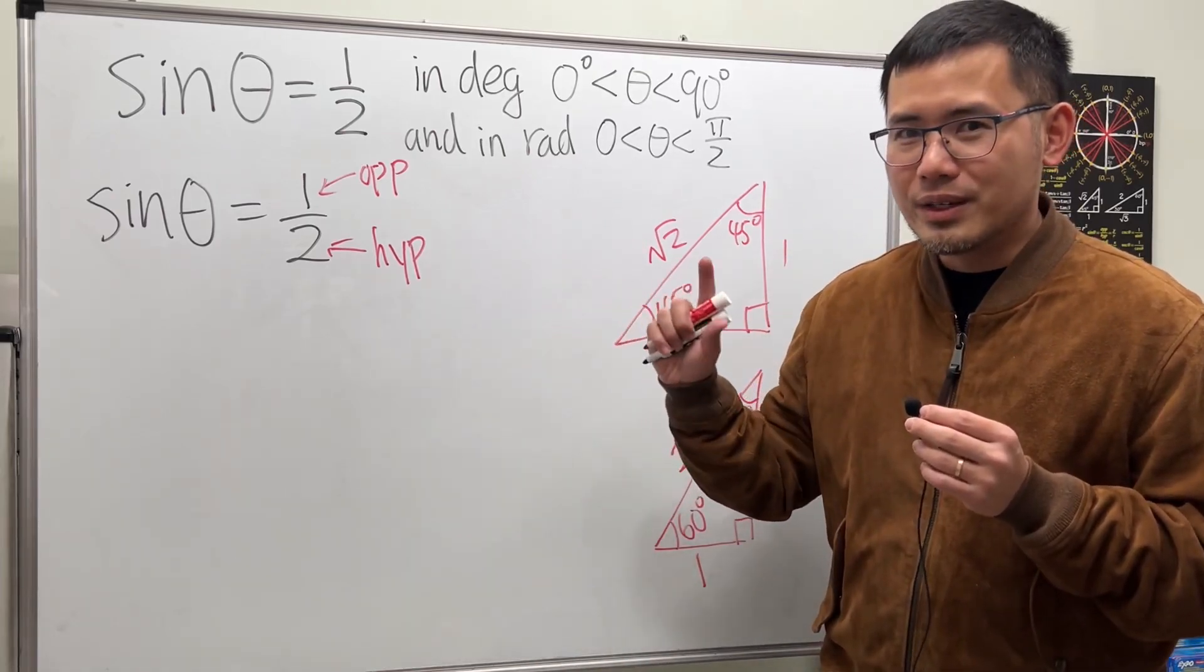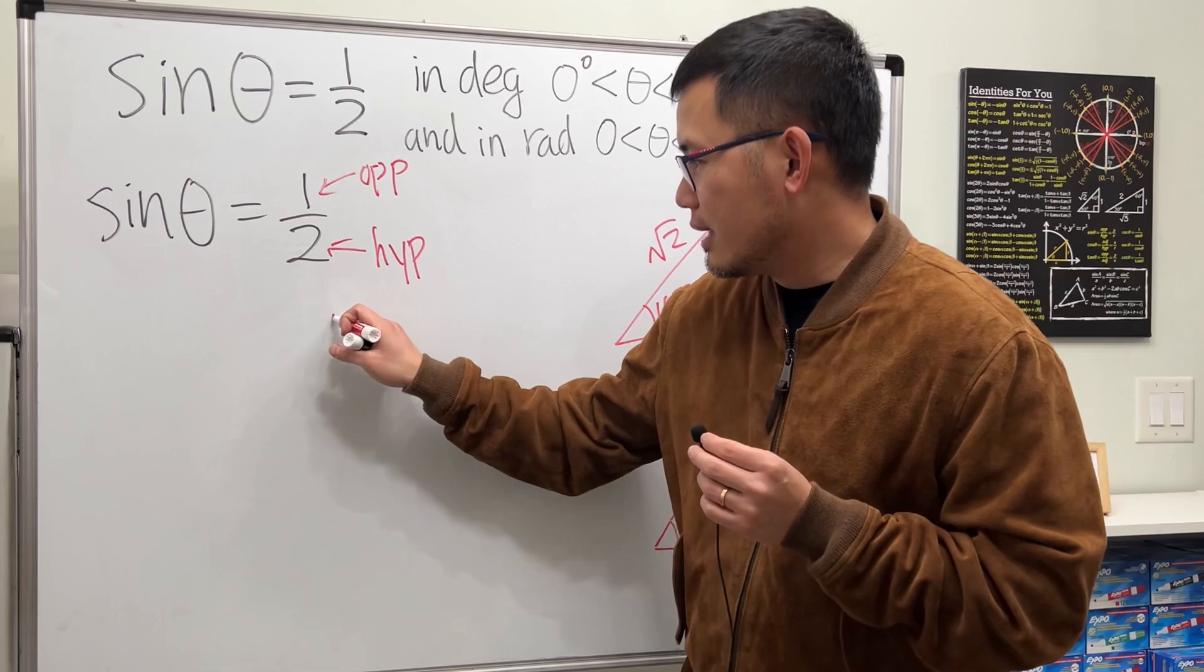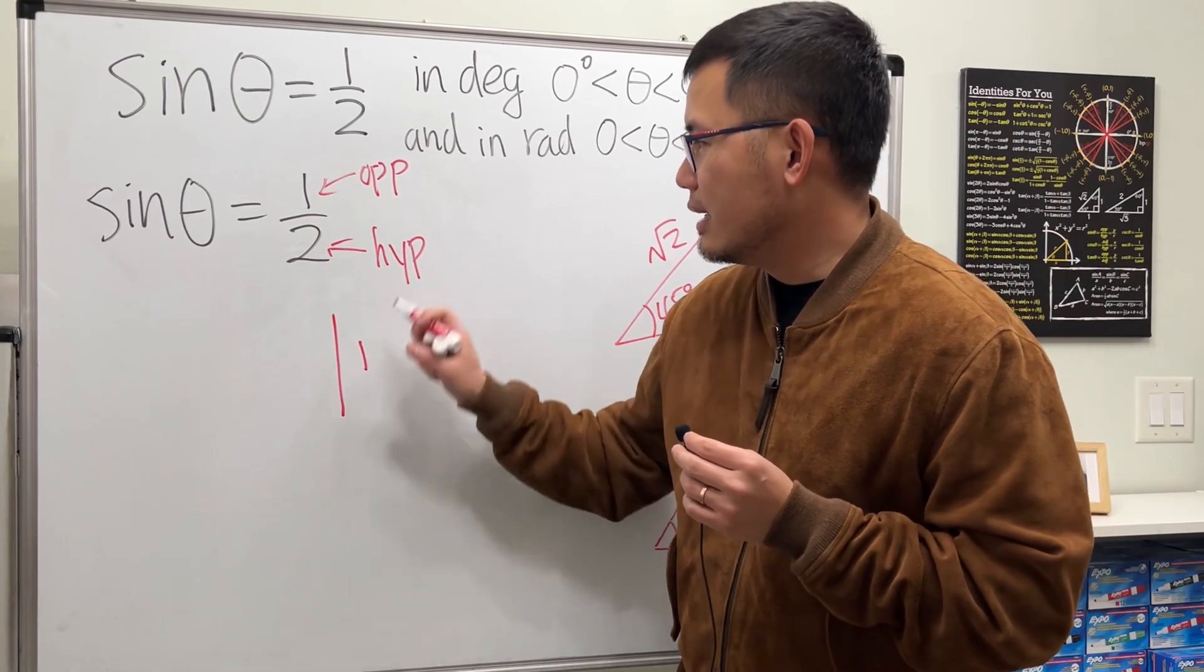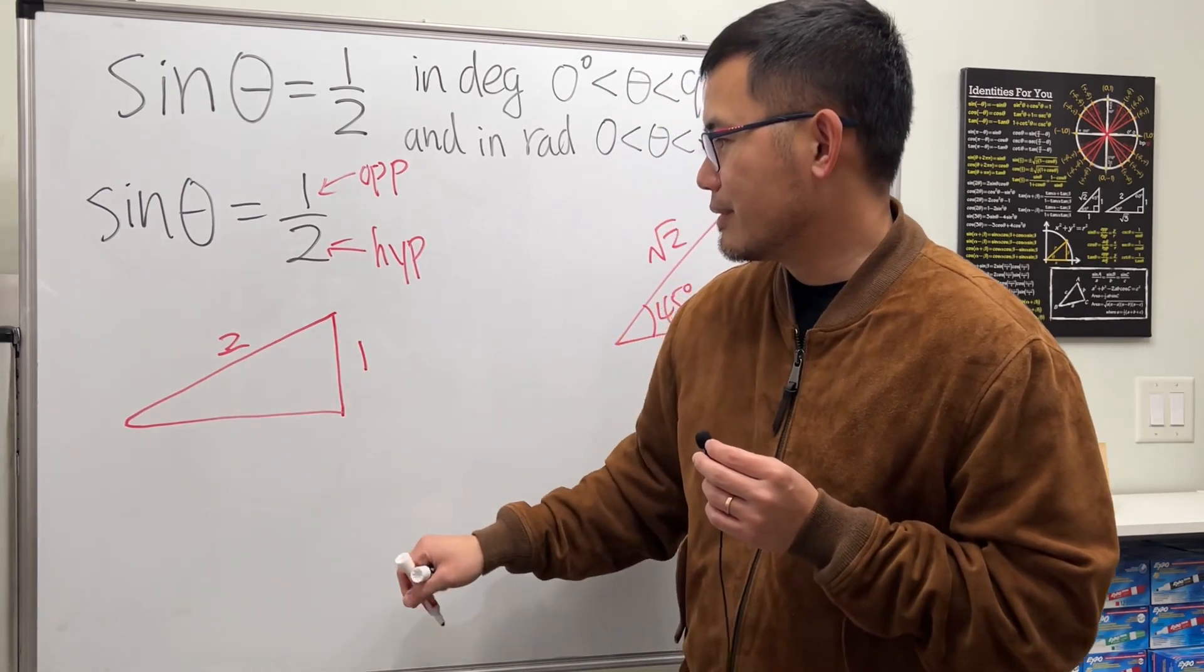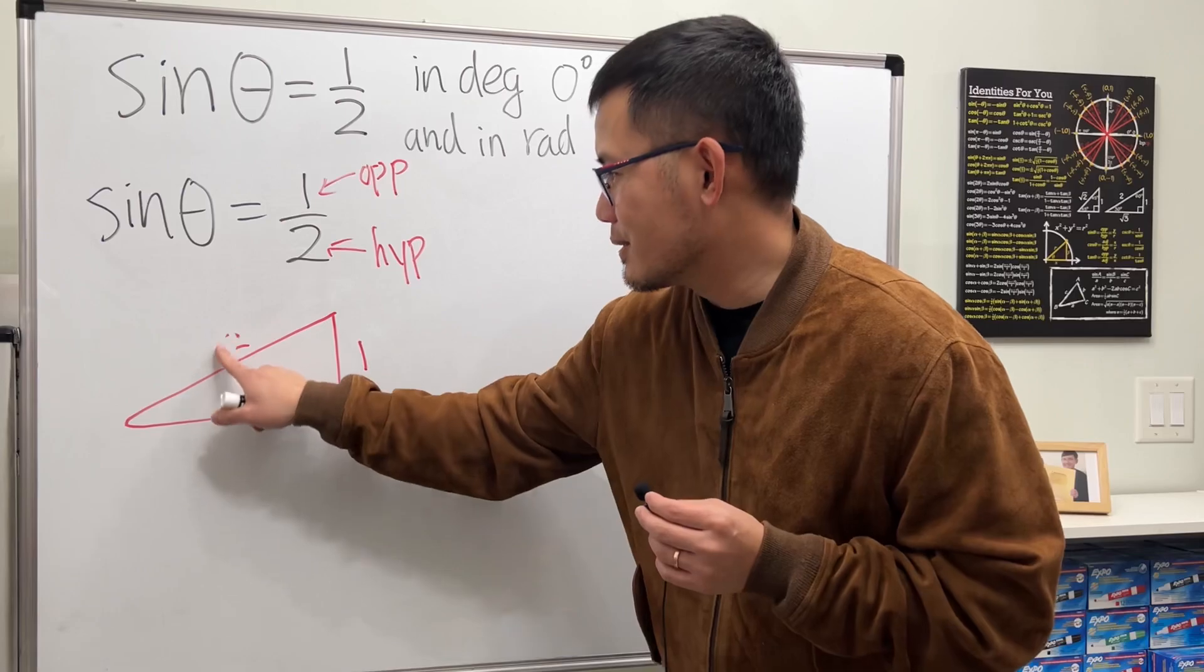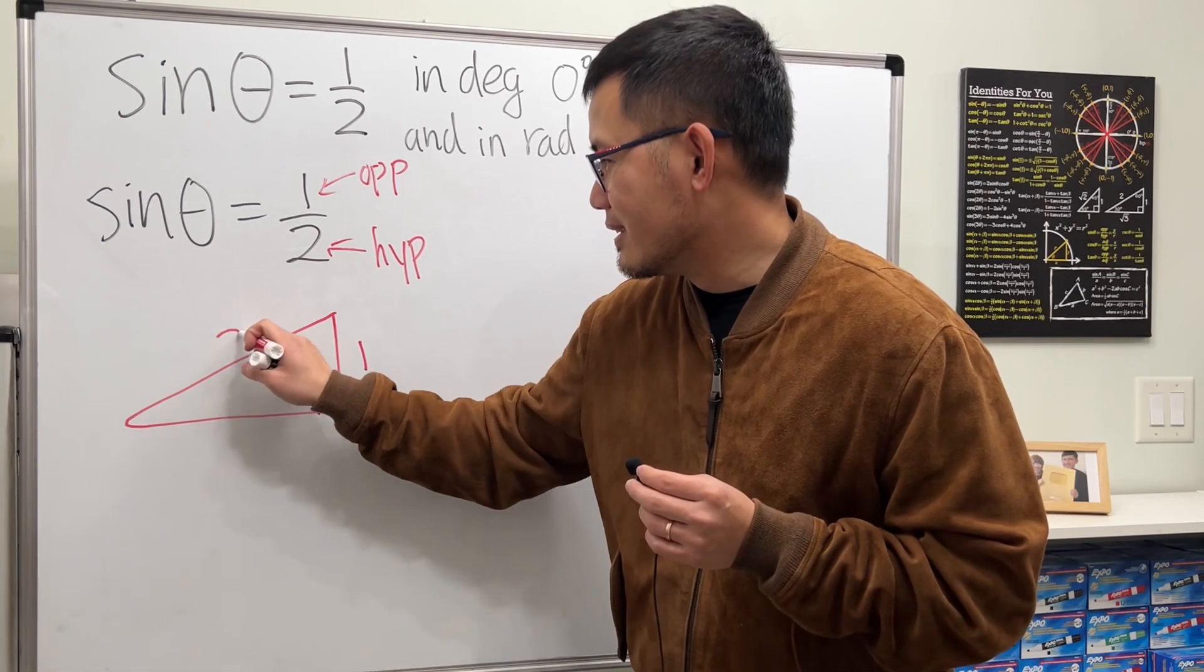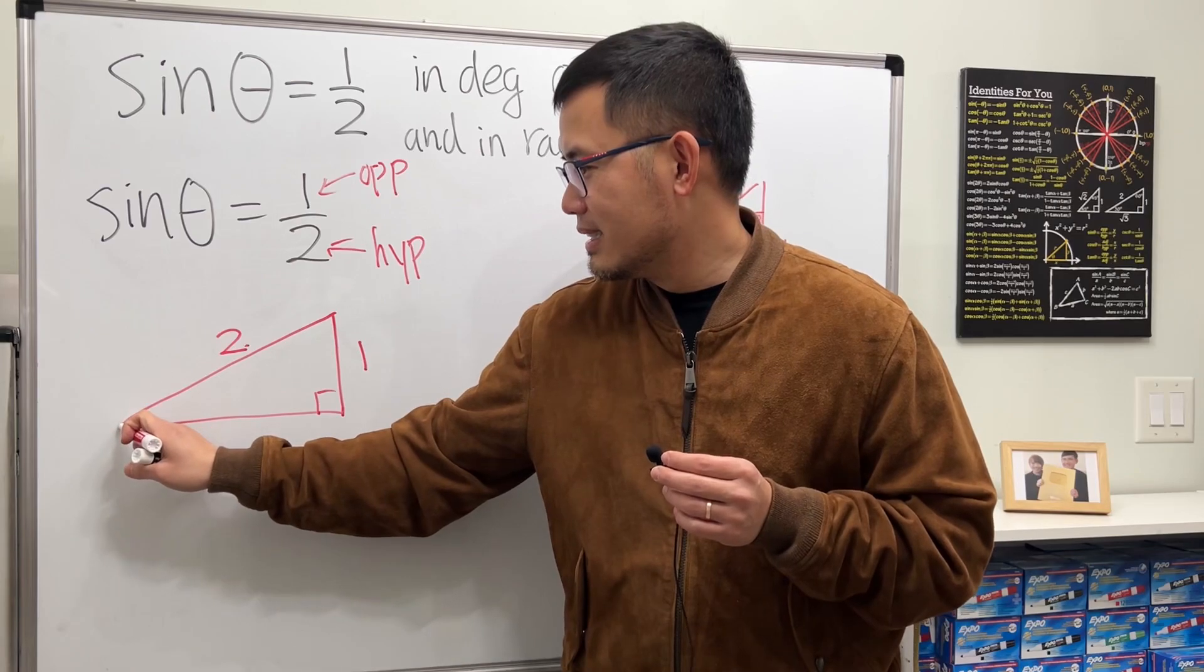Based on this, we can go ahead and construct a right triangle. Have a look. Let's say this right here is 1, and then hypotenuse is like this. Let's say this right here is 2. That's a 2. This right here is 2. Alright, so we're 1, 2, and then...